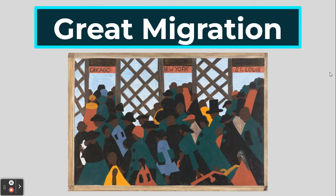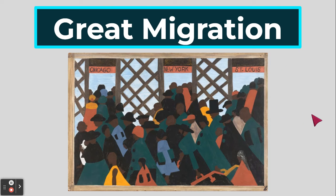During the Great Migration, Jacob Lawrence created his series of 60 paintings depicting the Great Migration. This one shows African Americans going to the train station and boarding trains to Chicago, New York, and St. Louis — three cities that are in the North.